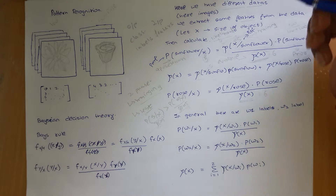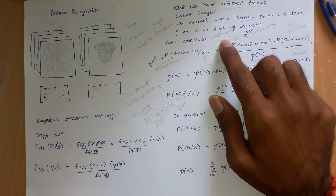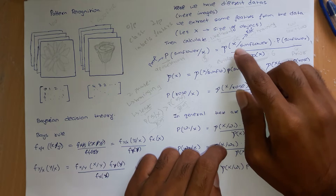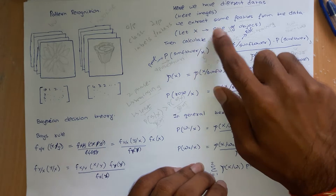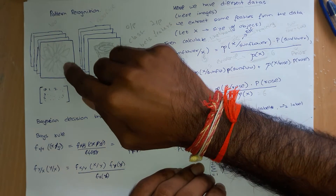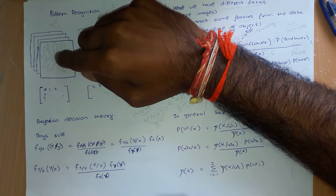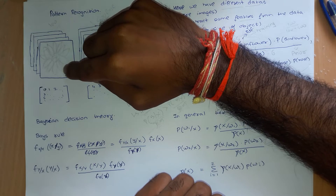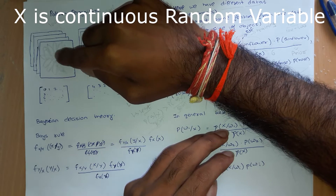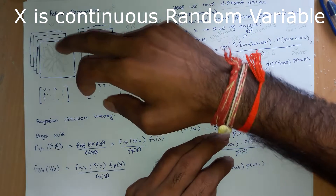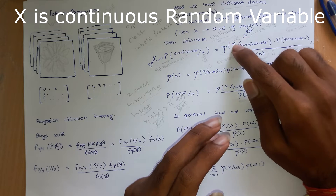Let us see why this is the case. Consider this probability — this is what we termed as likelihood. Here X can take any continuous value. I had denoted X as the size of the object, say the radius from the center. It can be 0, 1, 1.5, root 2, root pi — any real number from 0 to infinity. Hence X is a continuous variable.